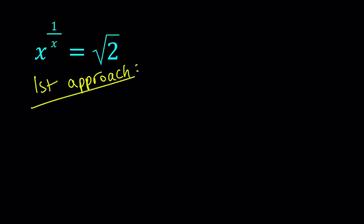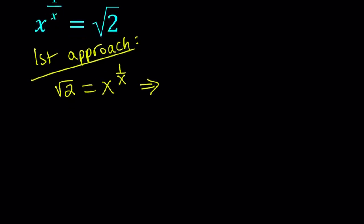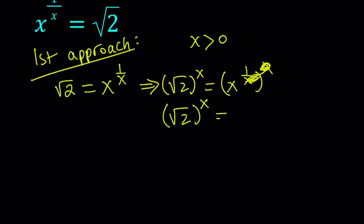For my first approach I'm going to write my equation as square root of 2 equals x to the power 1 over x and then raise both sides to the power x. In this case we don't want x to be negative because that's going to cause some issues and we don't want x to be 0 either. So x needs to be positive and if we raise both sides to the power x we get something like this and the x cancels out here. So we end up with something simpler: square root of 2 to the power x equals x.